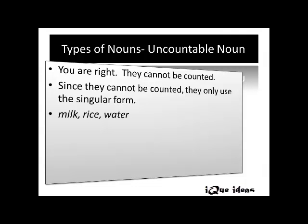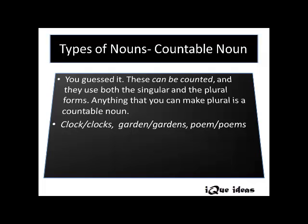The first type of noun is uncountable. As the word hints, these nouns cannot be counted and use only the singular form. For example: milk, rice, water, and so on. We cannot say milk number one, milk number two, rice number one, rice number two — they are considered uncountable.